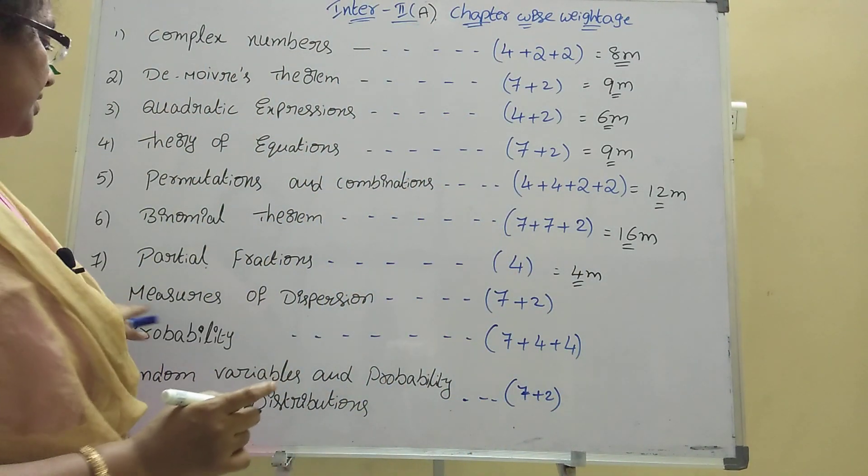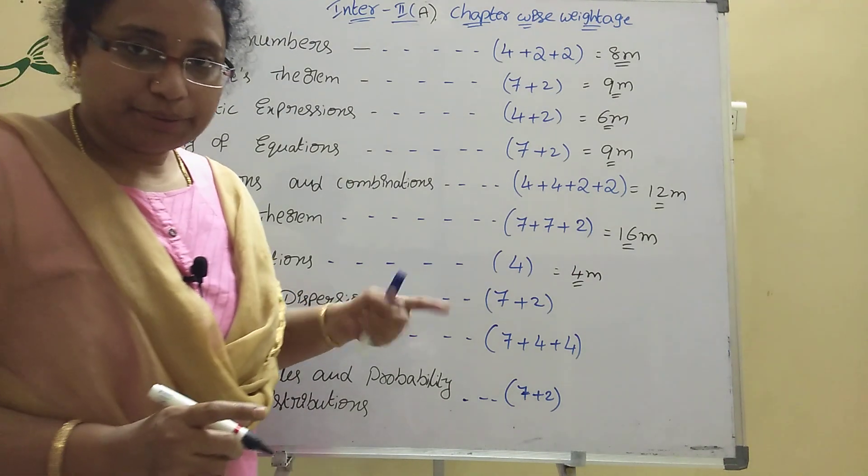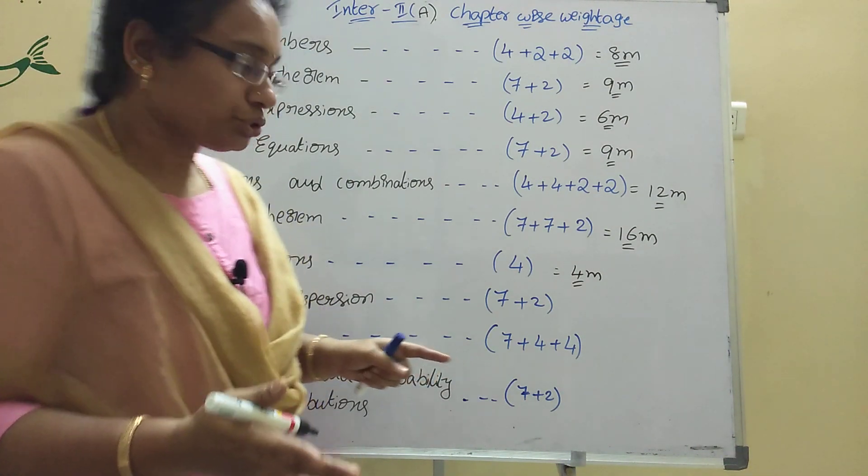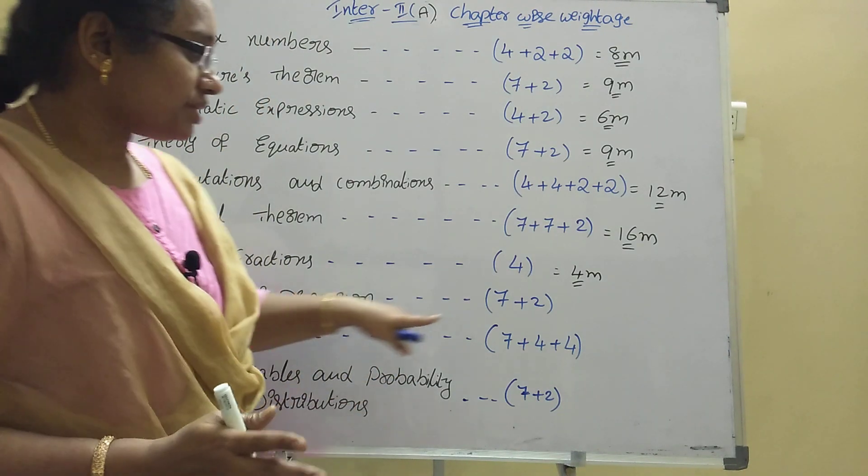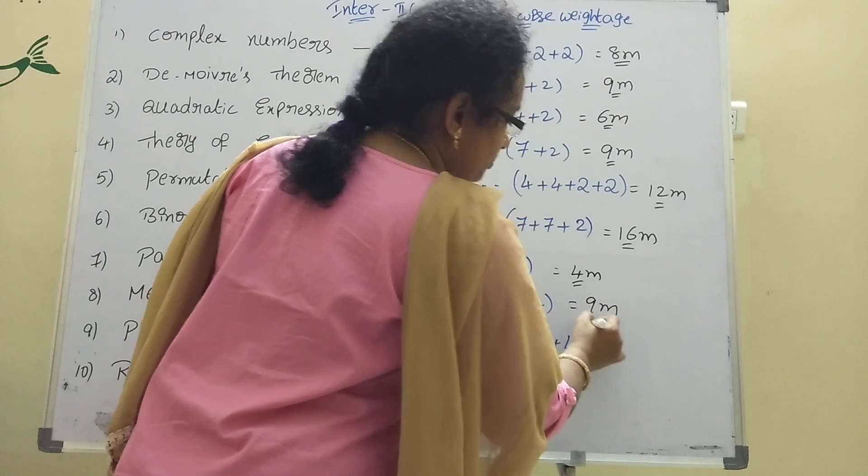Measures of dispersions: 7 plus 2, 9 marks. Already I posted, other models also I will post.